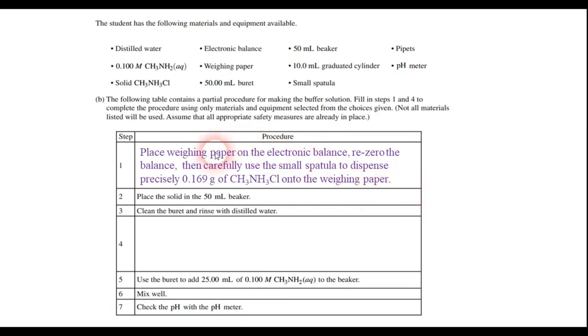And so this is what I would put. Place the weighing paper on the electronic balance, and we have an electronic balance, you'd re-zero the balance, then carefully use the small spatula that's given to us here to dispense precisely 0.169 grams of the compound onto the weighing paper. So that's the idea there. I know that if you are an analytical chemist, you may not do this. Some folks have a little problem with the spatula and the re-zeroing, but for AP chemistry, I think that this would work for your step one.